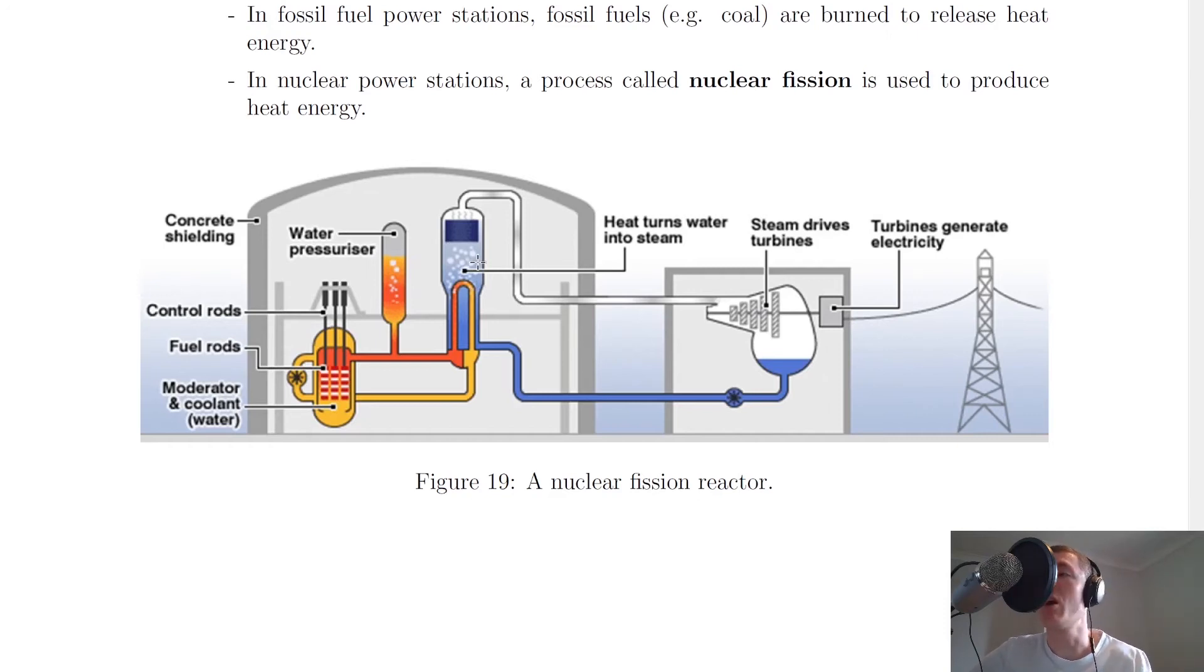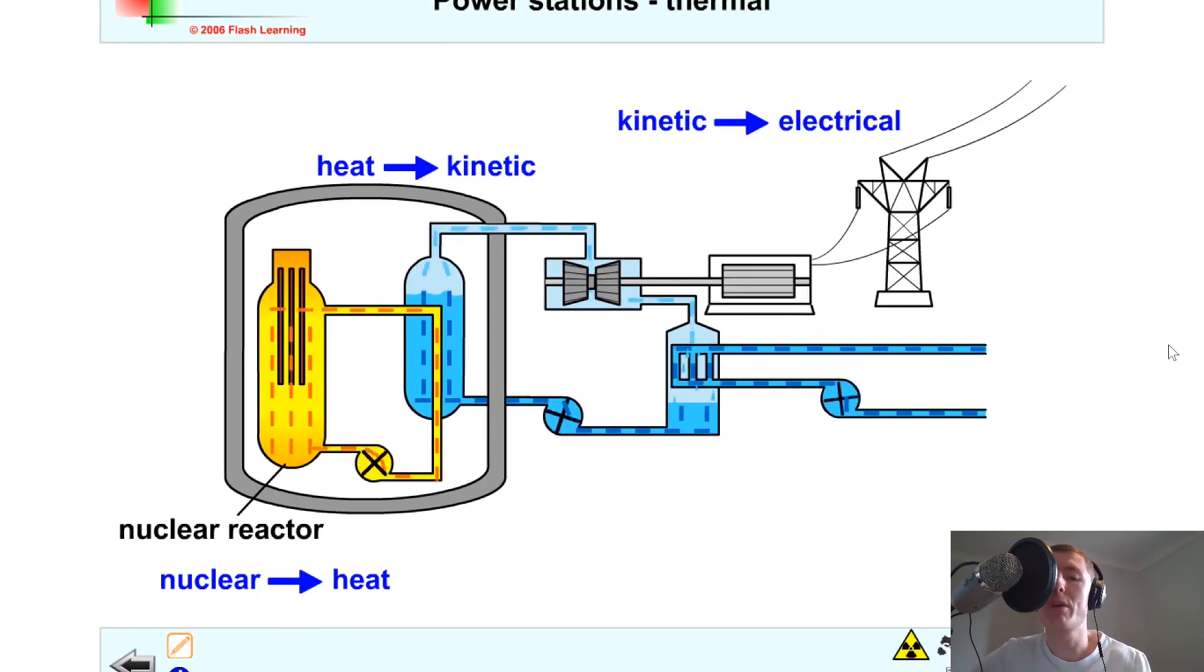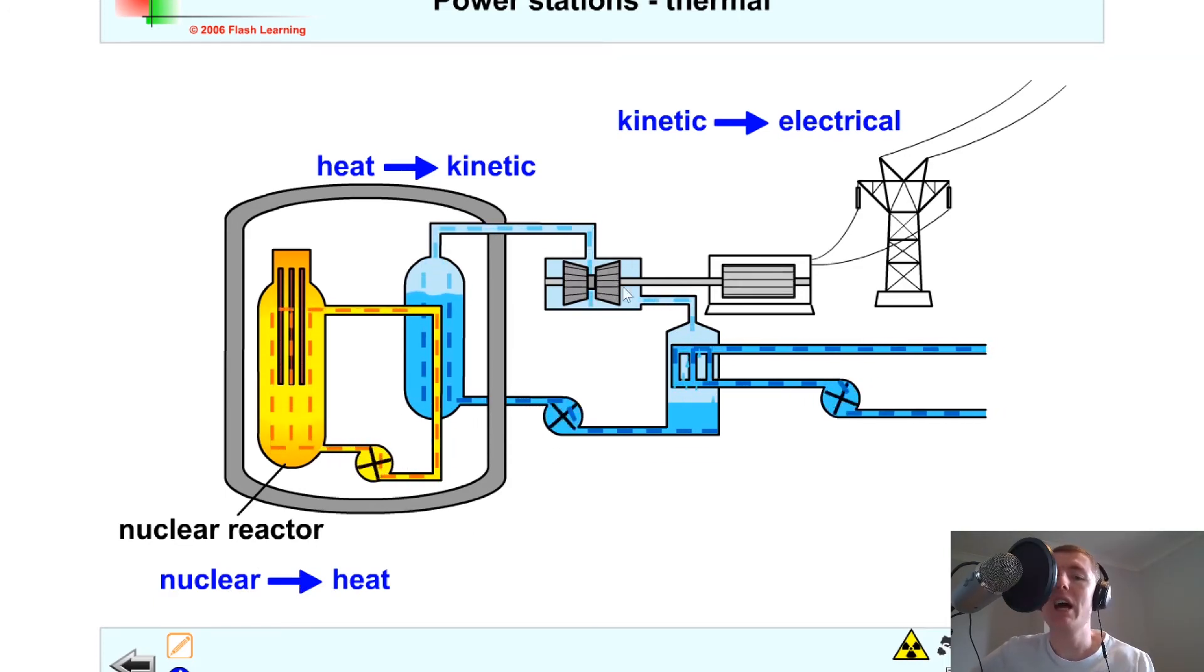Here's a similar setup of a nuclear power station, and this one has a bit of movement just to show you what's going on. Here you've got the heat from the nuclear fission reactions passing along this pipe which is passing through the water, and that's going to heat up the water to generate the steam. So we have our energy change of nuclear to heat energy, and then our steam is going to turn this turbine, so we have heat to kinetic energy, and then that movement energy drives the generator to create electrical energy.